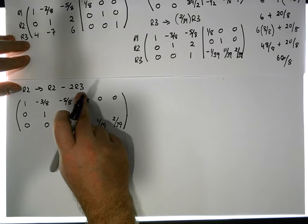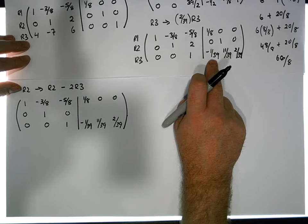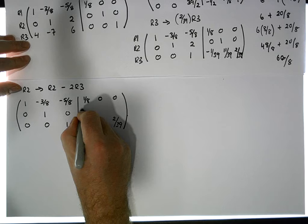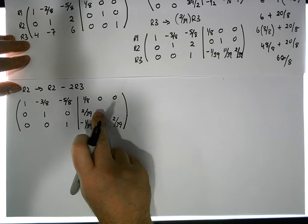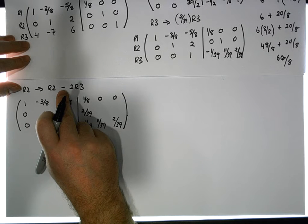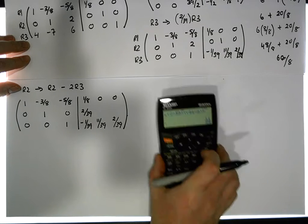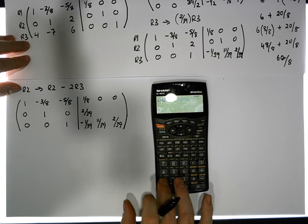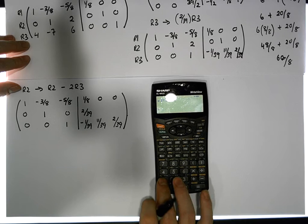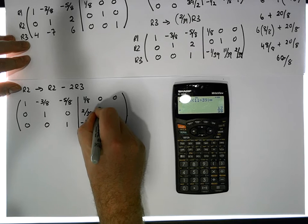Minus twice row three's value. Now row three's value is minus 1.39, so minus times minus is going to give us a plus, and two times 1.39 gives us 2.39.